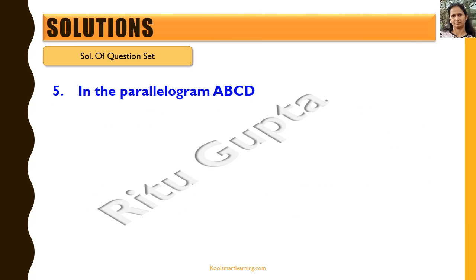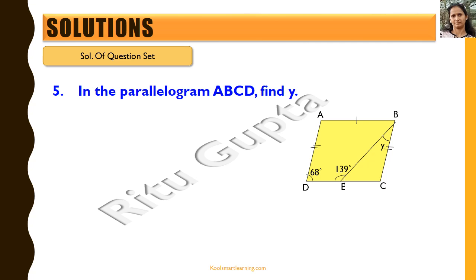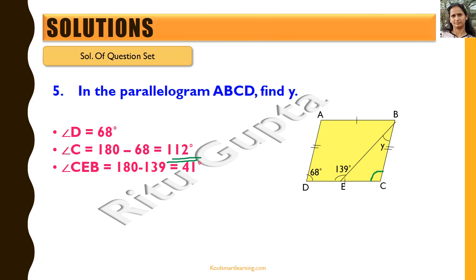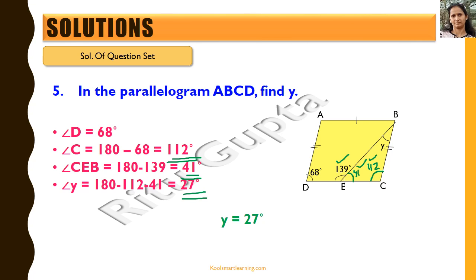Moving on to the fifth question. In the given parallelogram, we need to find the value of angle Y. Angle D is given to be 68 degrees, so angle C = 180 - 68 = 112 degrees. Angle CEB = 180 - 139 = 41 degrees. In triangle ECB, the sum of angles is 180 degrees, so angle Y = 180 - 112 - 41 = 27 degrees. So Y is equal to 27.